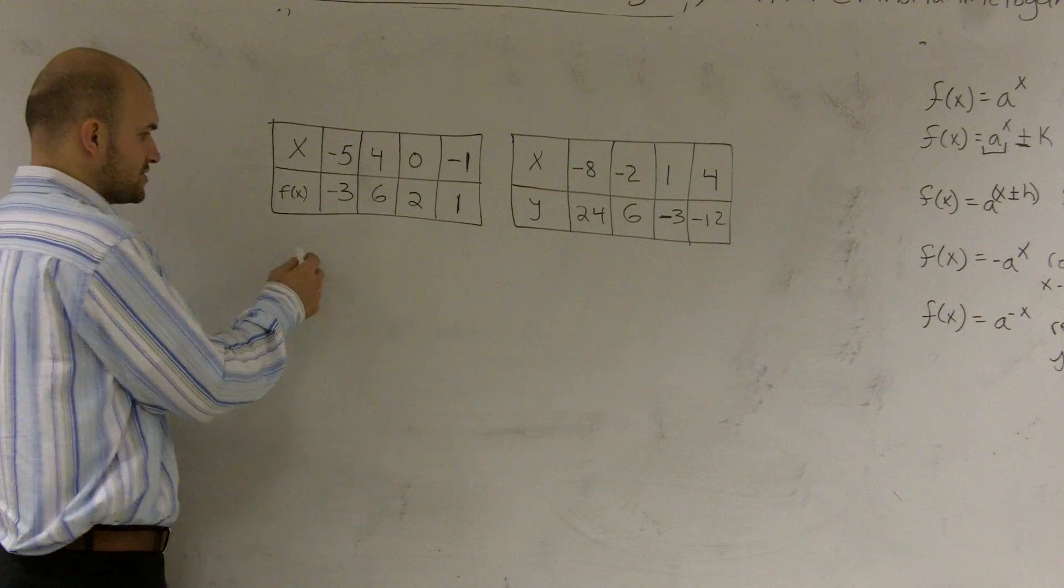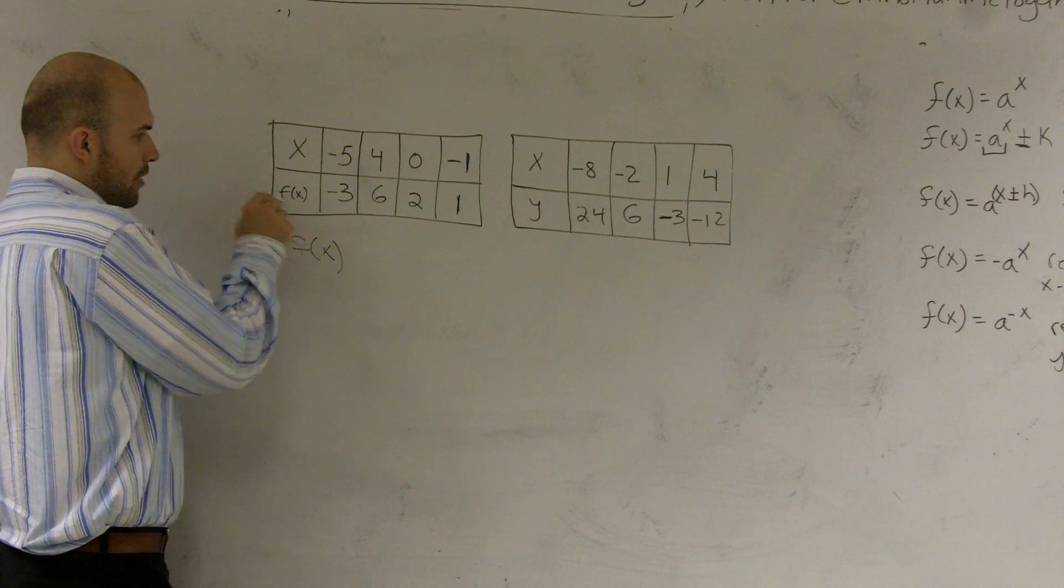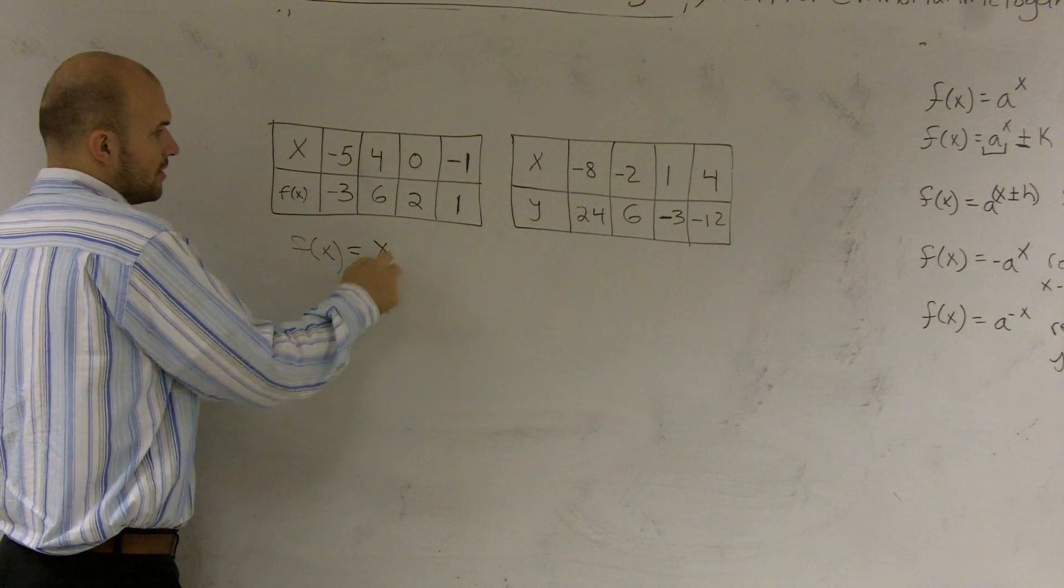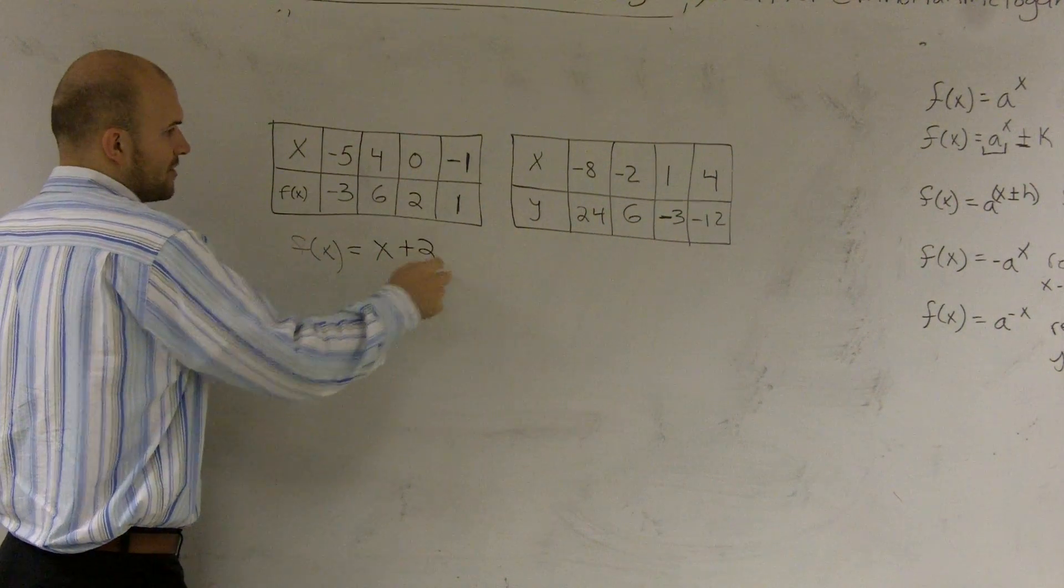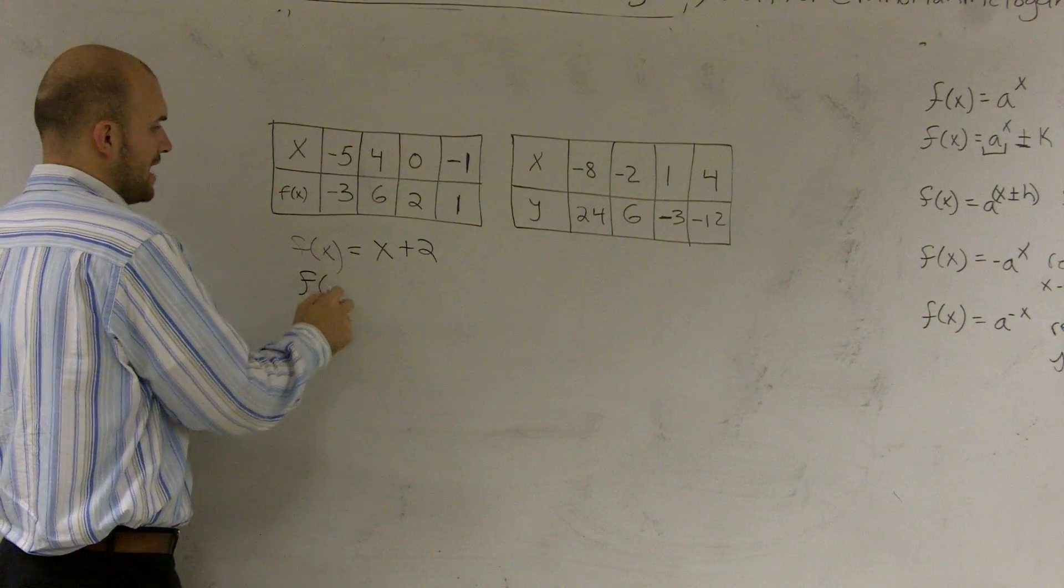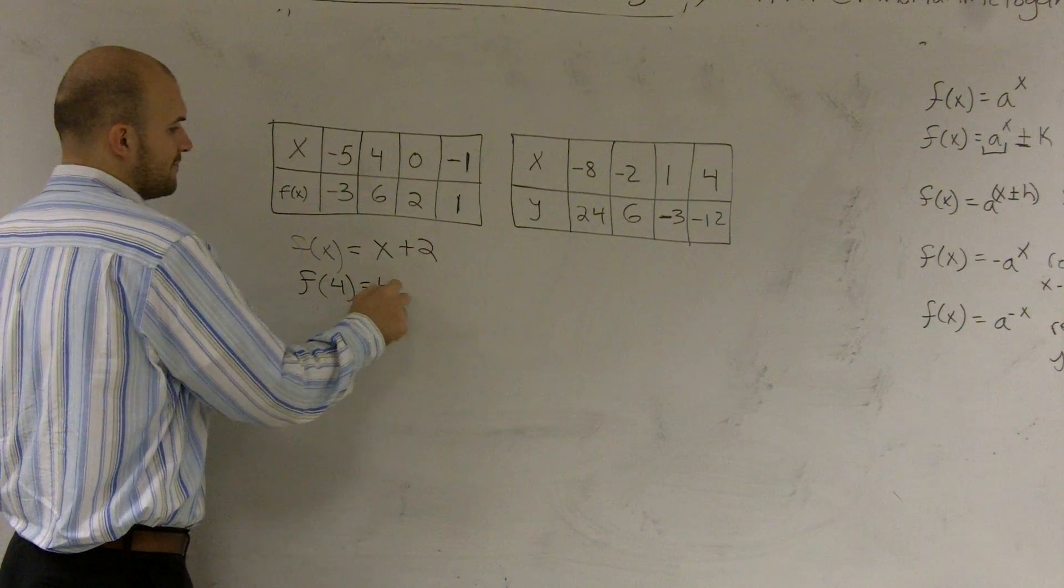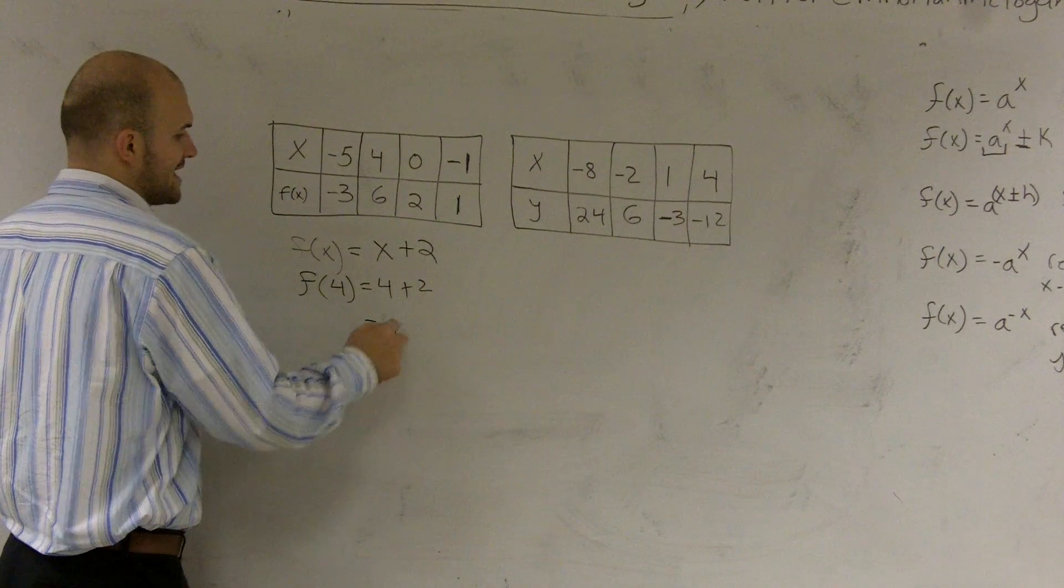Now, that works for this one. So I could say f of x, which is my output, equals x plus two, right? Because if I put in f of four, I get four plus two, which gives me six.